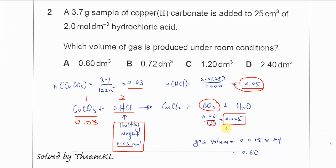Use the moles of gas that you obtained times the molar volume, so you get 0.6 dm³. Answer is A. Thank you.